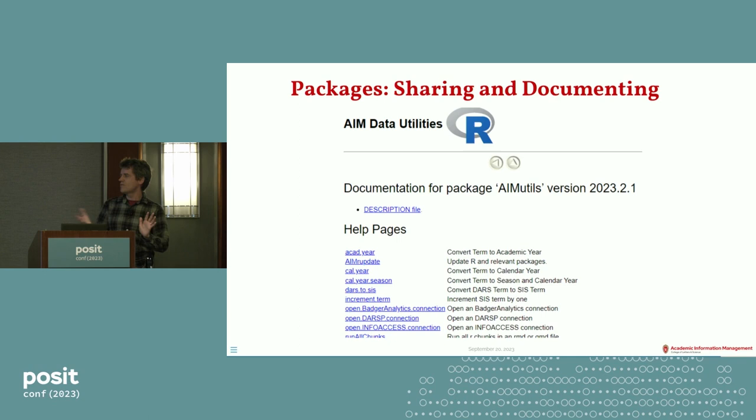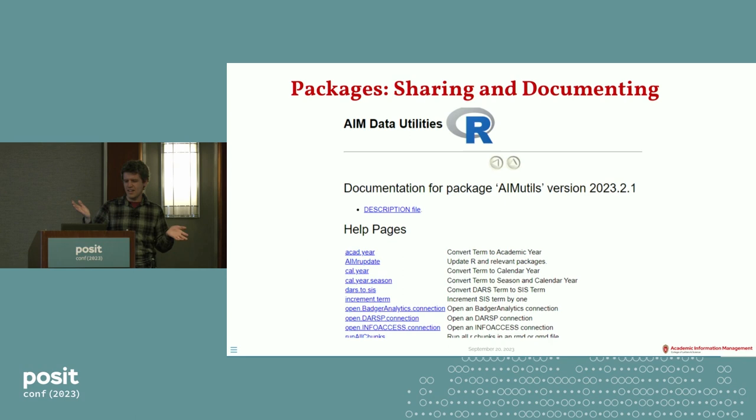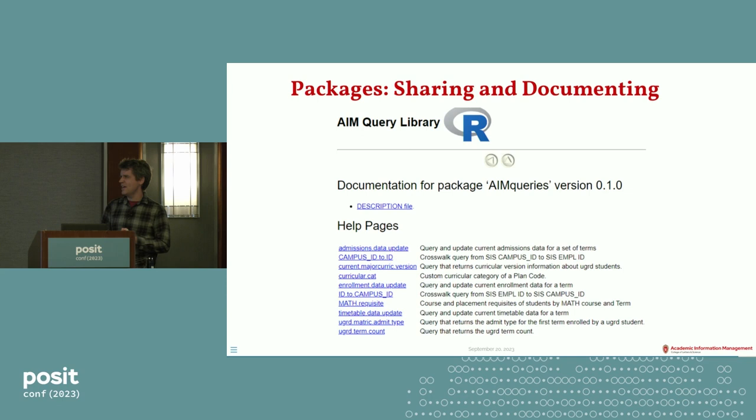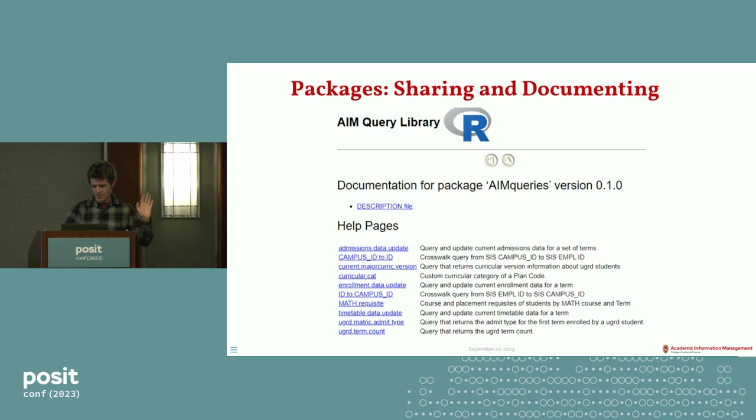We have two types of packages. One is public: aimutils has innocuous stuff like acad_year — things that don't expose any data or proprietary information. We also have an aimqueries package that contains queries for accessing our campus databases, and that requires some credentials managed in GitLab. So we're able to separate those into two different packages.